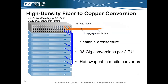Dual-channel media converters can also be used in a chassis configuration. Fully populating a 19-slot iConverter chassis with 2GXT dual-channel media converters yields up to 38 fiber-to-copper conversions in a 2U rack space. It's a scalable architecture — plug in different cards as needed, cover blank slots with panels, and all media converters are hot-swappable.